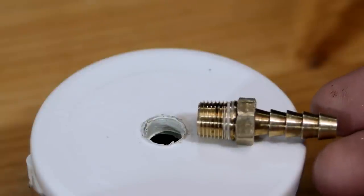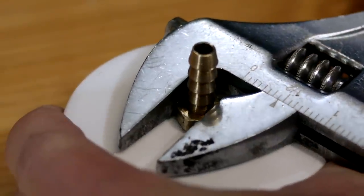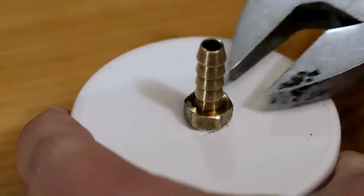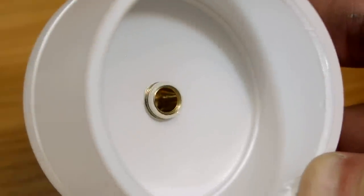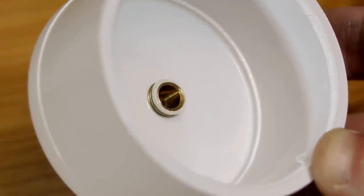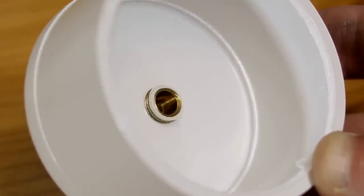The hole drilled should be just small enough that the brass threads bite into the PVC for an airtight seal. The first of the two one-way valves will be mounted over this brass fitting on the inside of the end cap.